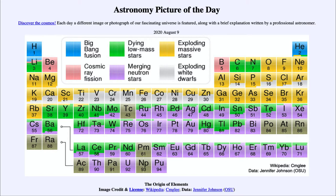The different colors code different types of ways that elements can be created. Starting with the blue, which is the Big Bang — so during the Big Bang that created the universe, certain elements were formed. But if you look, you don't see a lot of blue on the table.